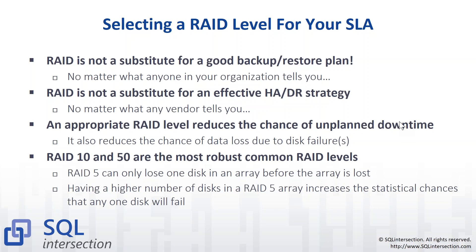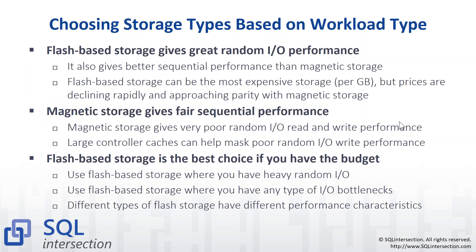RAID 10 and RAID 50 are the most robust common RAID levels. RAID 5 is very brittle, especially as you have a bigger array. Choosing storage type based on workload: flash storage gives you great random I/O performance — the gap on sequential is not as big. Magnetic gives fair sequential but terrible random performance. Flash is absolutely the best choice if you have the budget, and costs have come down to about the same as magnetic was a few years ago.